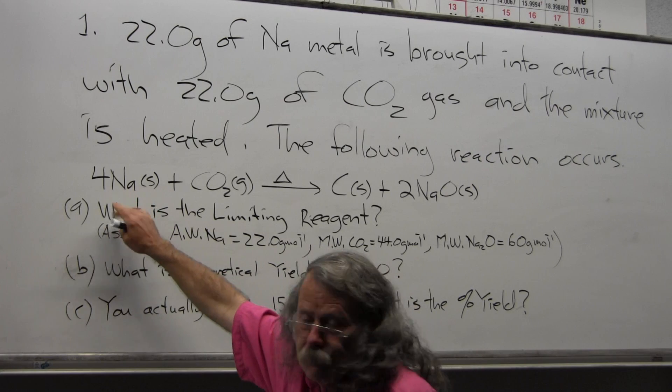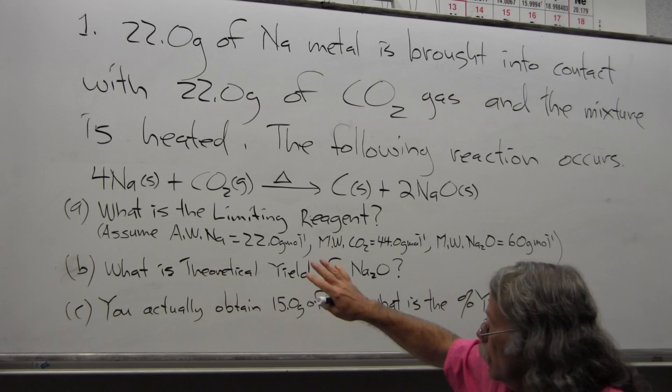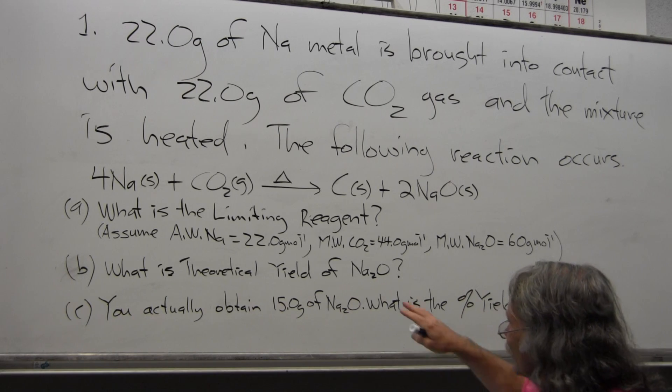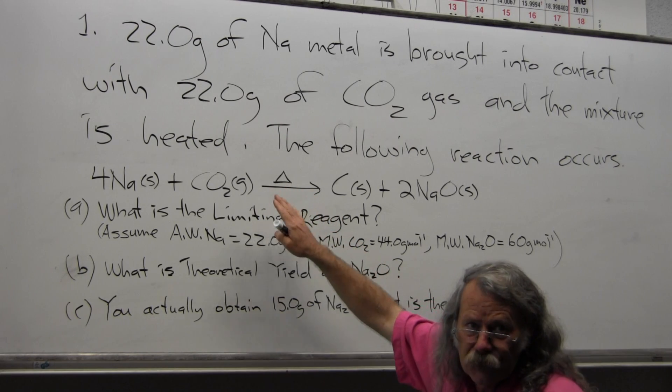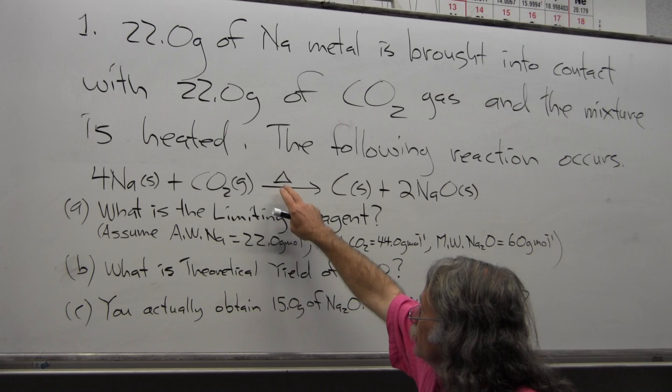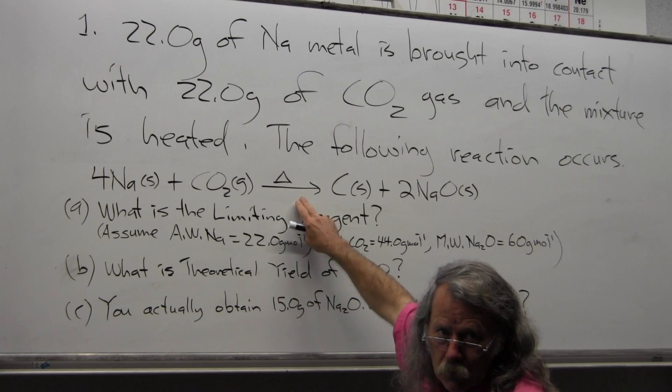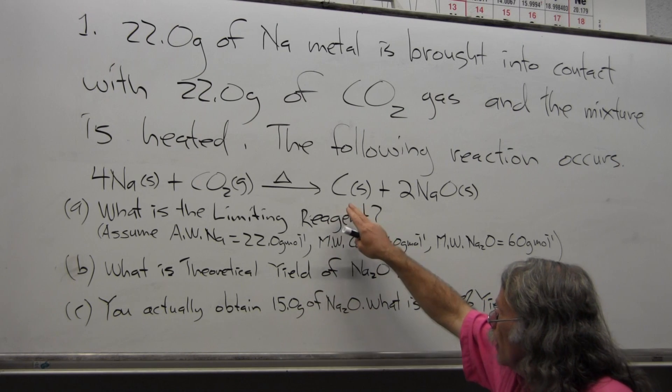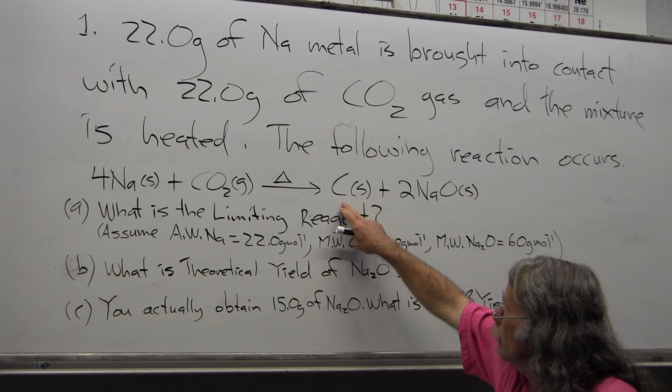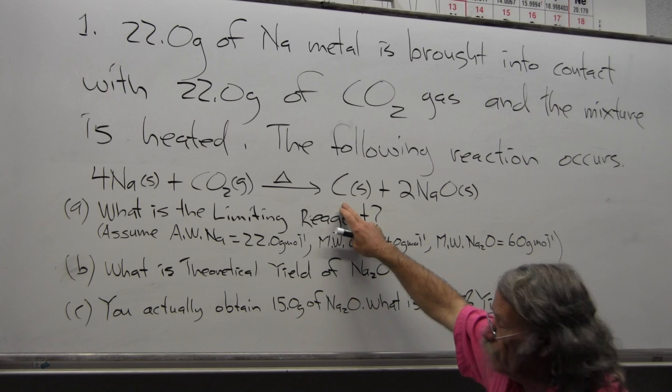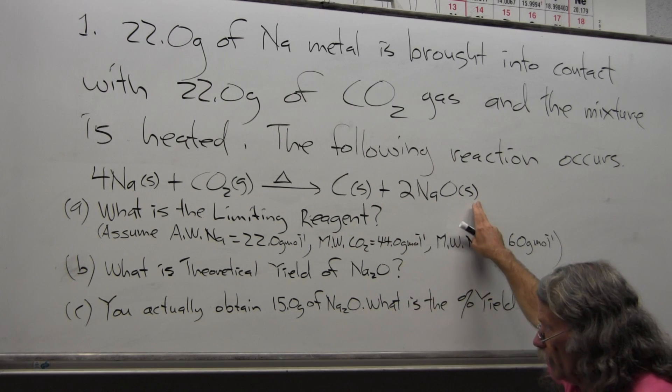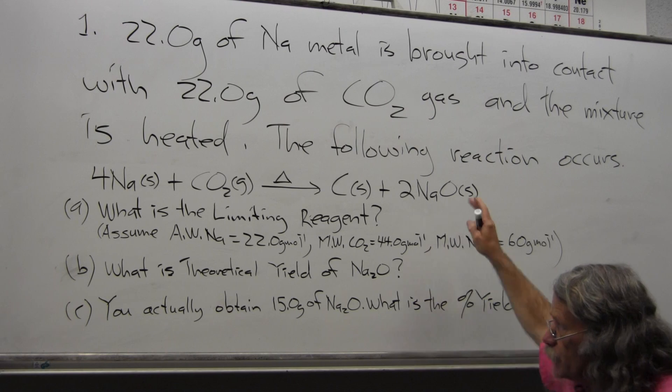I have four sodium metals in the solid state and one carbon dioxide in the gaseous state which is heated, depicted by a delta over the arrow. I get as product one carbon in the solid state and two sodium oxides in the solid state.